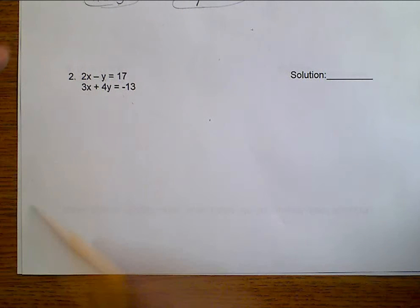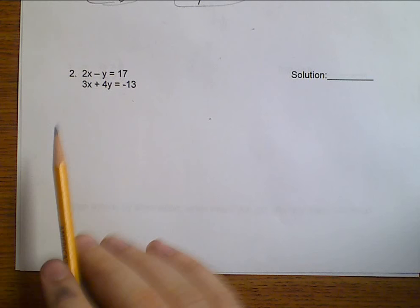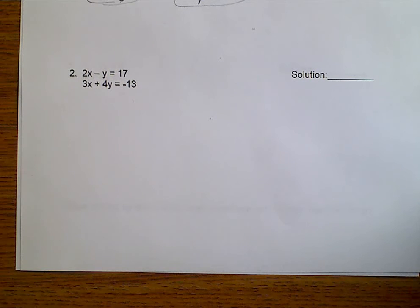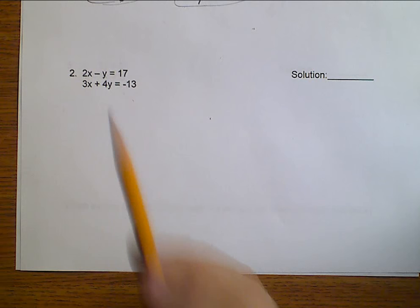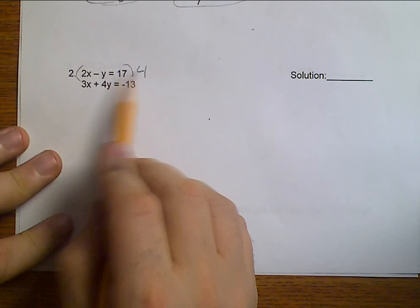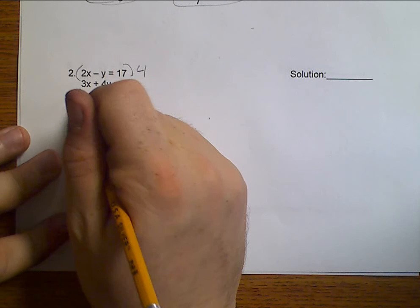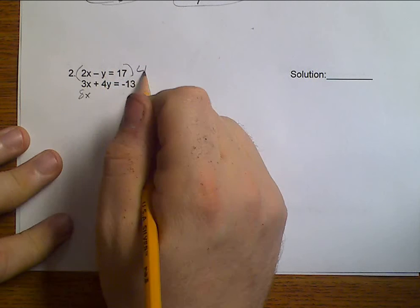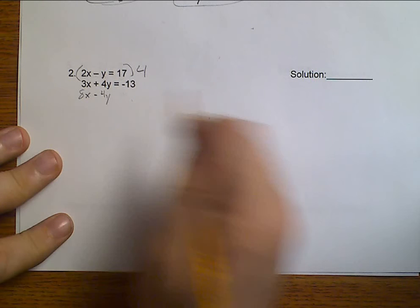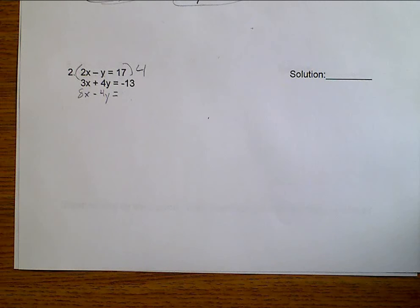Now, we need to get them to match. We have 2X and 3X. We have negative Y and we have 4Y. Well, nothing matches. Well, I need to multiply to get something to match. Well, I know that I can multiply this top equation by 4 because 4 times Y will give me 4Y. So, let's go ahead and do this. 4 times 2 makes 8X. 4 times the negative Y makes minus 4Y. Equals, and then I need to do 17 times 4. And we get that that equals 68.